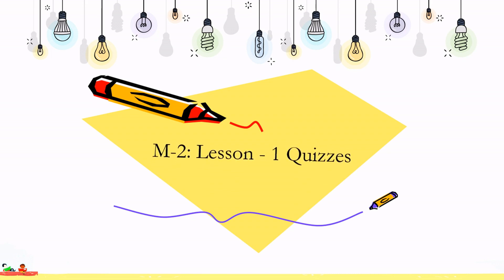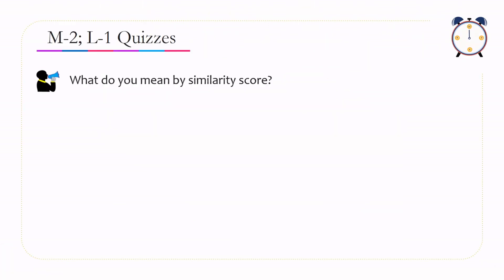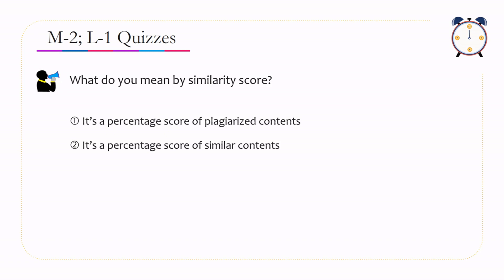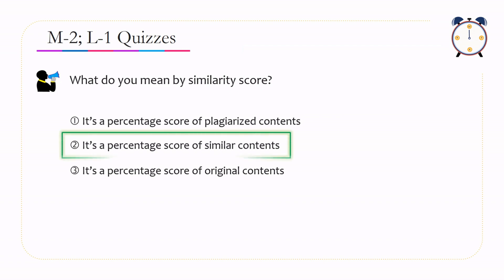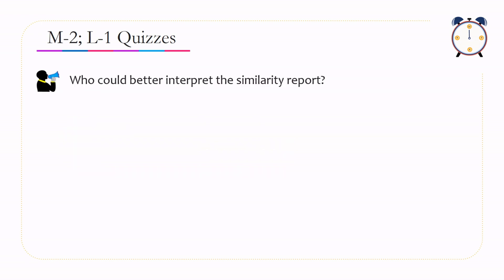Now let's test your learning with quizzes — 10 seconds for each question. First question: What do you mean by similarity score? Option 1: a percentage score of plagiarized contents. Option 2: a percentage score of similar contents. Option 3: a percentage score of original contents. The correct answer is option 2 — similarity score is a score for similar contents.